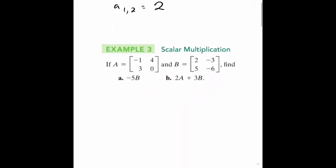Next we have scalar multiplication. Highlight that word scalar. That means we multiply a constant into our matrix. Negative 5B means negative 5 times the B matrix. You distribute the negative 5 to everything: negative 10, 15, negative 25, and 30.